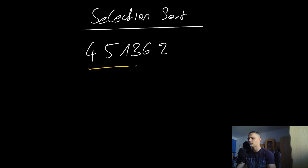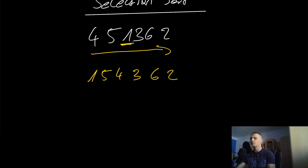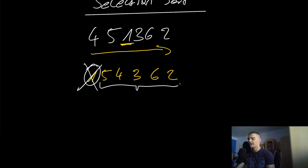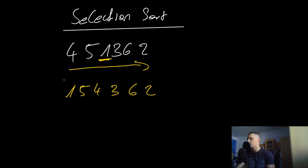Selection sort works similarly but in the opposite way. We scan the list and look for the smallest element — the minimum. In this case that's one, and we put it at the first position by swapping it with four. After one iteration, the first element is at its correct position, and we have n minus one elements left to sort.